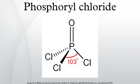POCl3 reacts with hydrogen bromide in the presence of AlCl3 to produce POBr3.